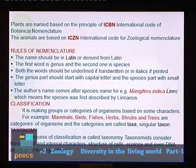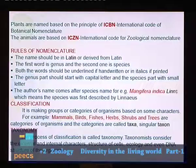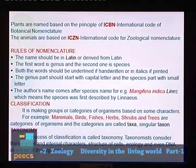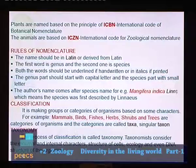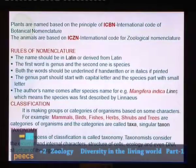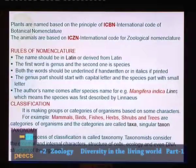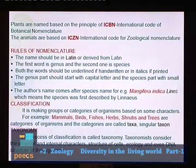The rules of nomenclature: the first word is the genus name and the second is the species name, as in Mangifera indica. Both words should be underlined if handwritten or in italics if printed. The genus part starts with a capital letter and the species part with a small letter — M in Mangifera is capital, i in indica is small. The author's name comes after the species name — for example, Mangifera indica Linnaeus, indicating the species was first described by Linnaeus.